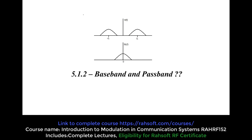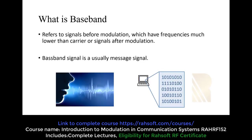So first of all, we are going to study about the baseband. What is baseband, or we can say a baseband signal, refers to signals before modulation, which have frequencies much lower than carrier or signals after modulation. So we have three kinds of signals: the signals before modulation, which is the message signal.